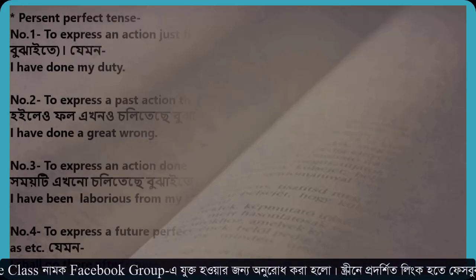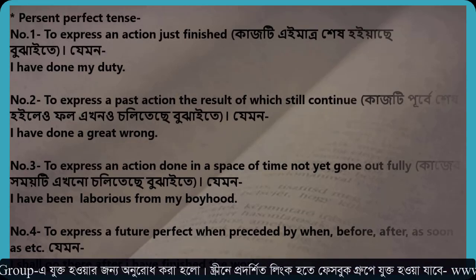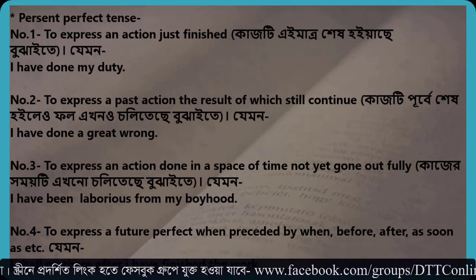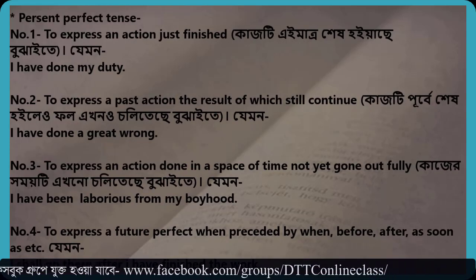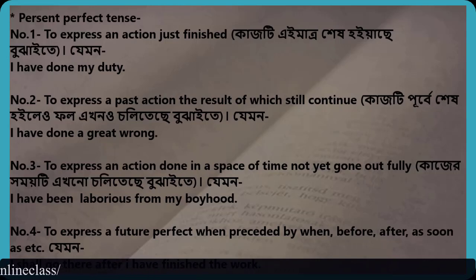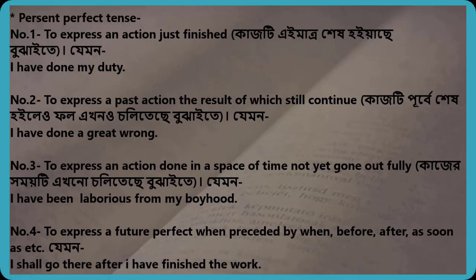Present perfect tense. Number 1 — to express an action just finished. For example: I have done my duty. Number 2 — to express a past action the result of which still continues. For example: I have done a great wrong.